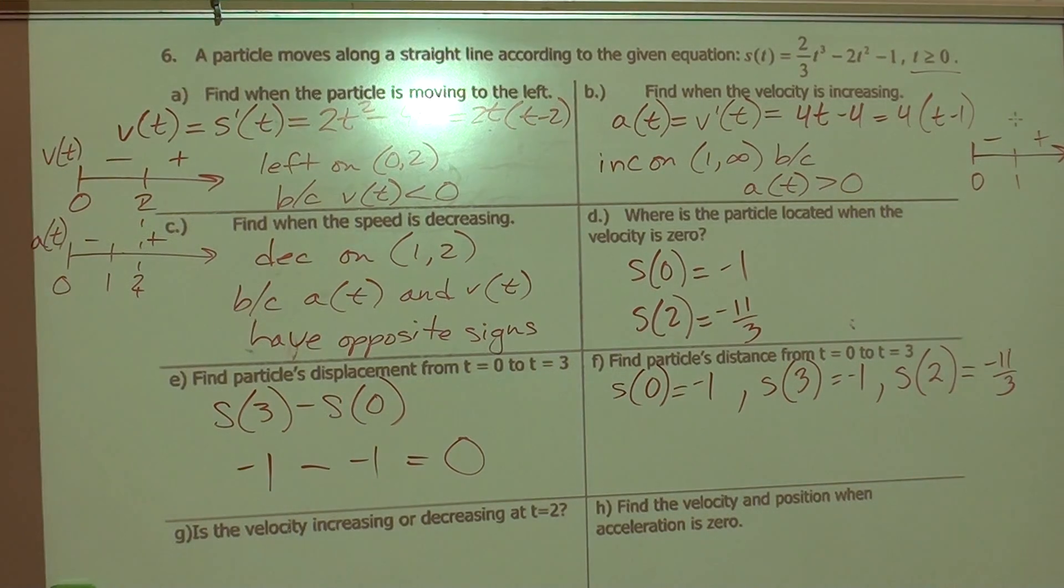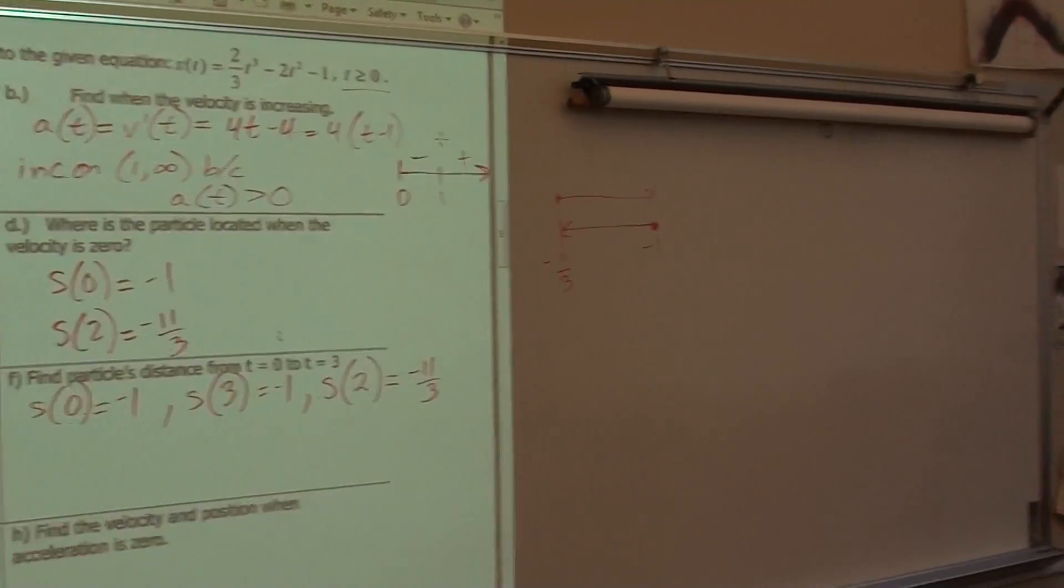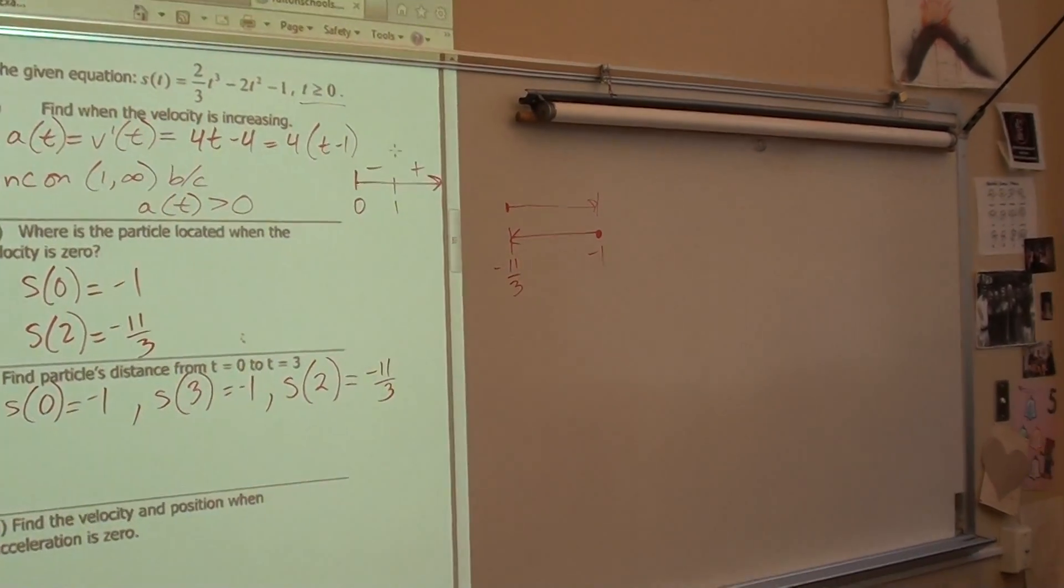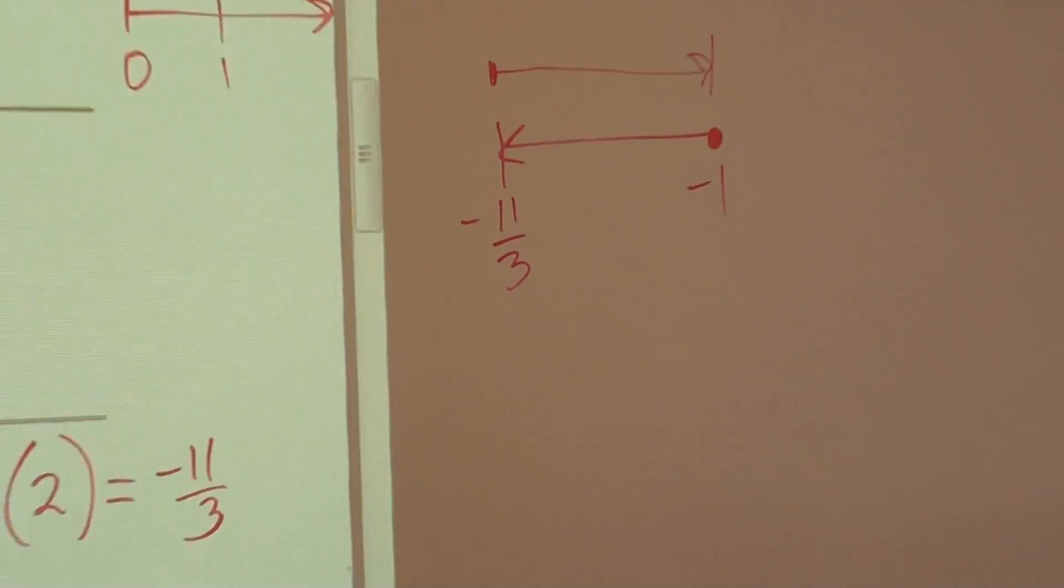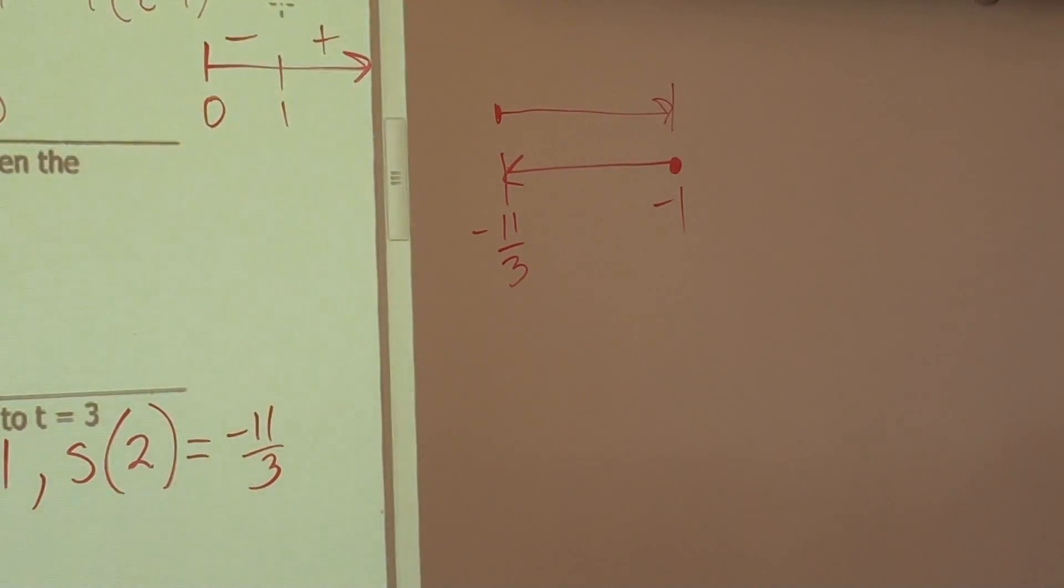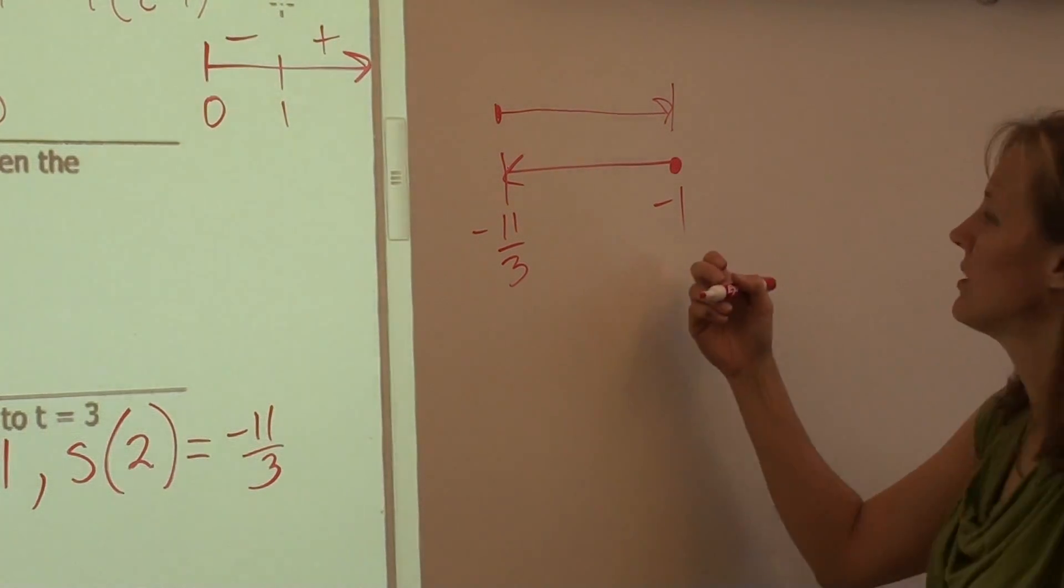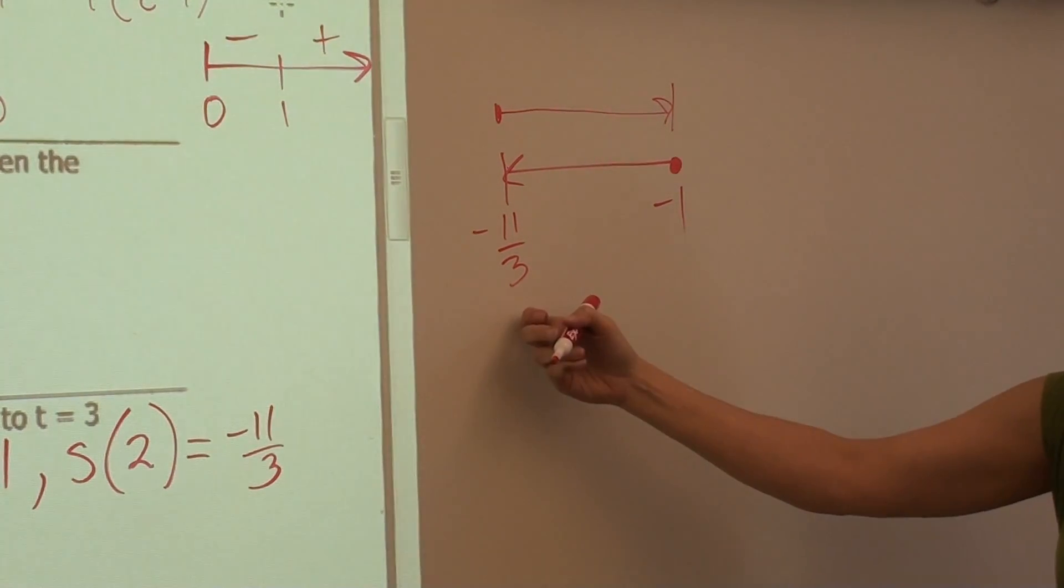and went back to negative 1. So how far have I traveled? Right. So this is negative 3 thirds and negative 11 thirds. So I moved negative 8 thirds and then I moved 8 thirds.